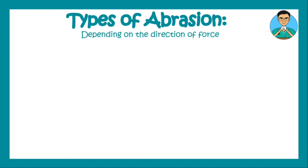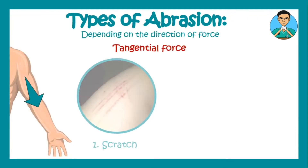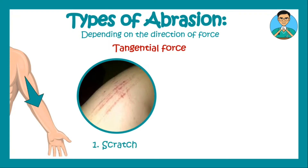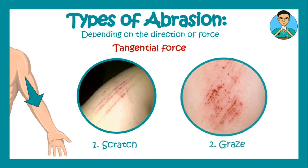Depending on the direction of force, if the force is tangential, we get scratches that you can get by scratching your skin with a pin or your nail. And you can get grazes. As you can clearly see, grazes is nothing but a scratch in a 2D arrangement. That means multiple scratches present in a small area represent a graze.